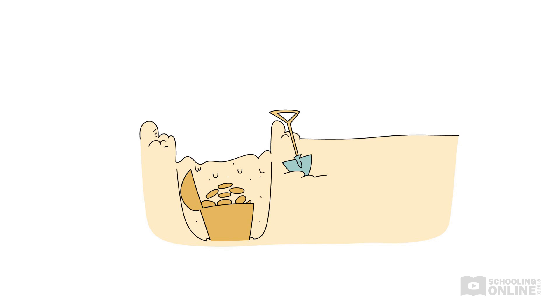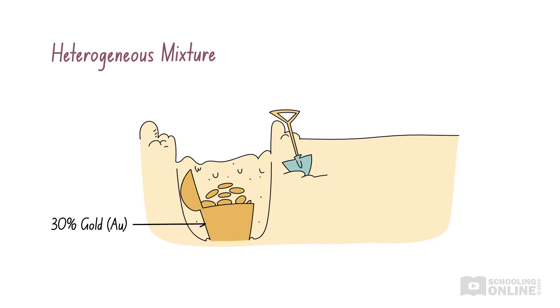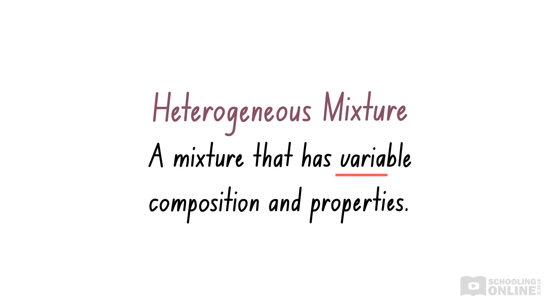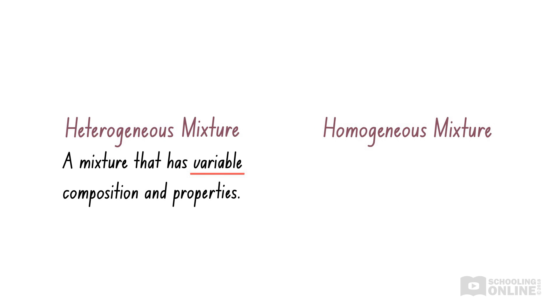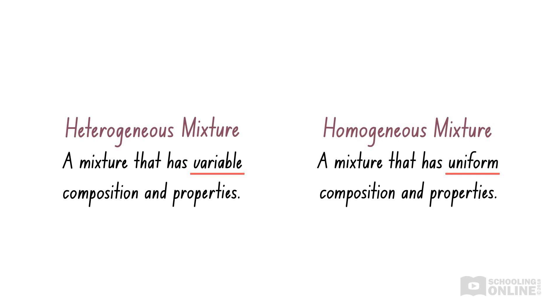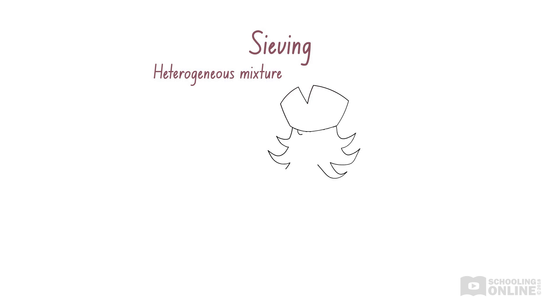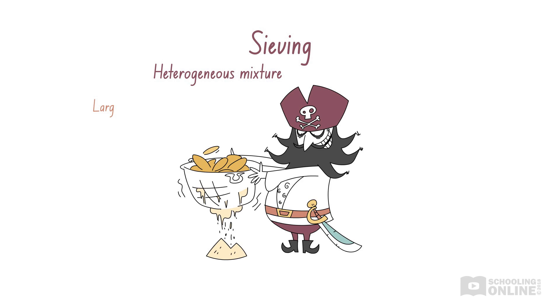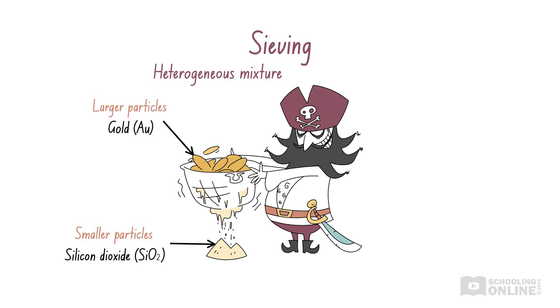Remember our earlier video, Pure Substances and Mixtures? Blackbeard the pirate wanted to separate a heterogeneous mixture of gold coins and sand. A heterogeneous mixture is a mixture that has variable composition and properties. In comparison, a homogeneous mixture is a mixture that has uniform composition and properties. To separate the gold coins from the sand, Blackbeard used a sieve that had holes smaller than the gold coins but larger than the sand particles. That way, the gold coins collected in the sieve while the sand fell to the ground.